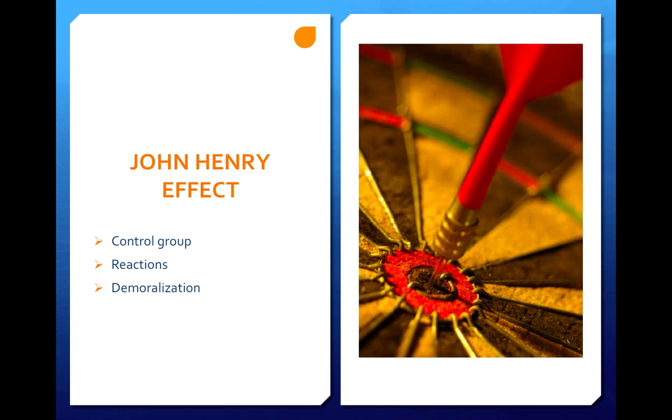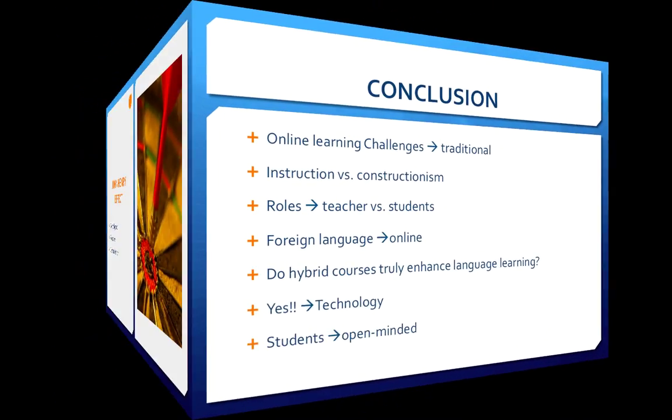The John Henry effect: the control group participants may become demoralized and resentful because they are not receiving the same treatment as the experimental group.